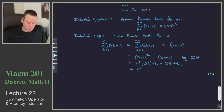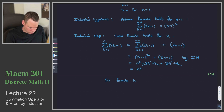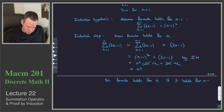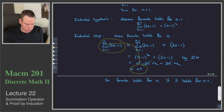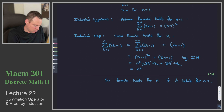The formula does hold for n. So the formula holds for n if it holds for n minus 1. That's how this inductive argument works: assume it's true for n minus 1, then it's also true for n.